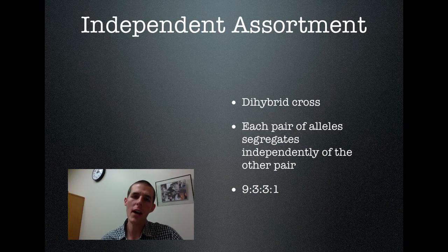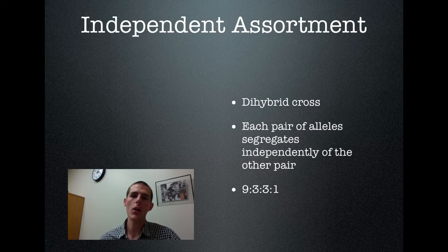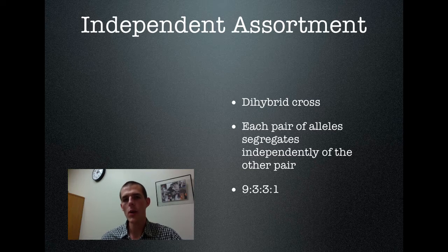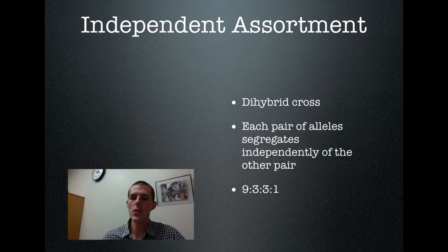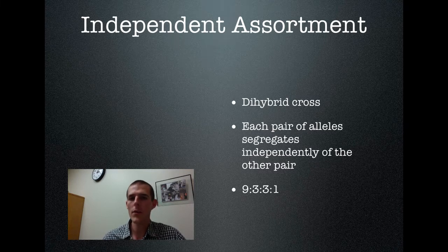In most dihybrid crosses, there is a phenotypic ratio of nine to three to three to one. Whatever traits you are watching for, nine of the individuals will have one combination, three will have another combination, three will have another combination, and one will have the rarest combination. So know that ratio: 9:3:3:1. Thanks for hanging out with us on this edition of the Lab 207 webcast. My name is Mr. Kite — hopefully I'll see you again soon.